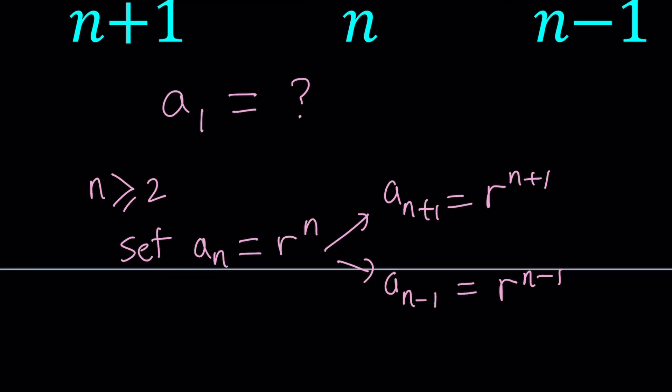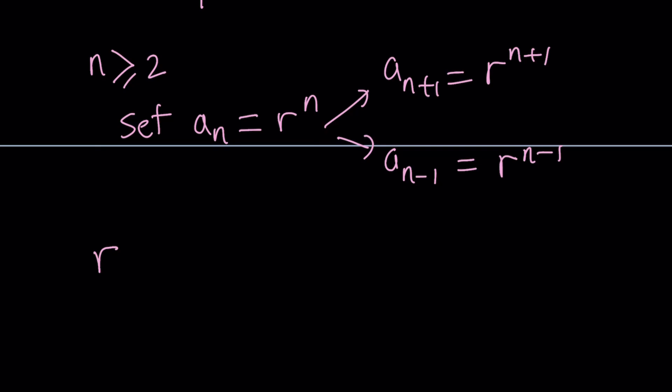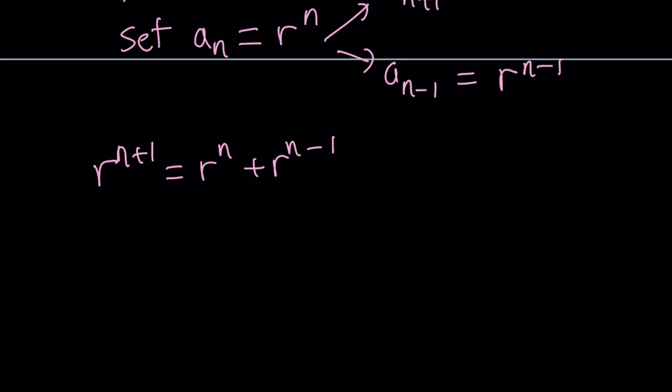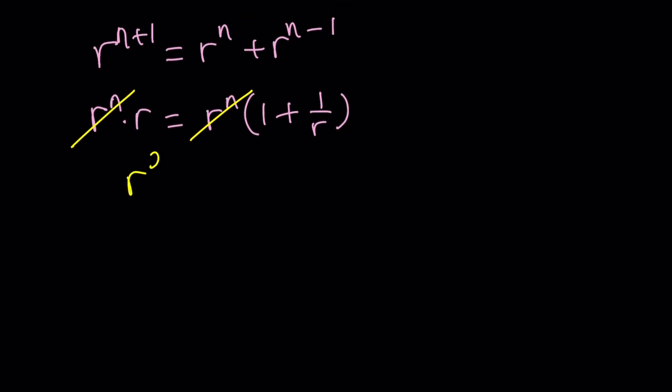Now let's go and unplug all these into our equation. We get r to the power n plus 1 equals r to the n plus r to the n minus 1. Now we can split this up into r to the n times r, and this one we can take out an r to the n and get 1 plus r to the power negative 1, which can be written as 1 over r. Now if r to the power n does not equal 0, which would mean r does not equal 0, we can go ahead and cancel out r to the n from both sides.